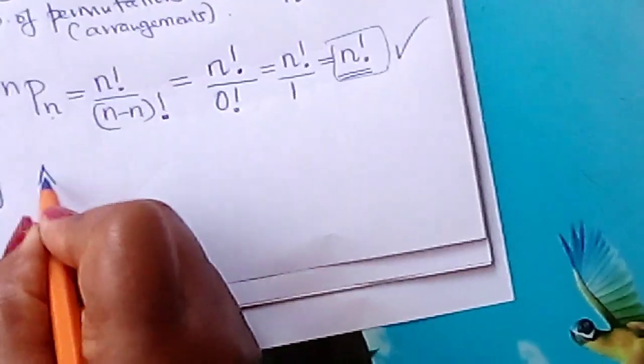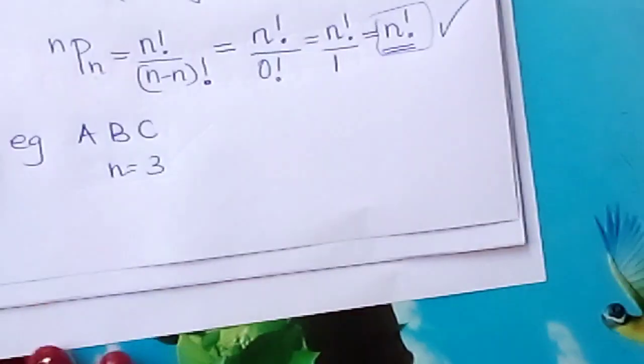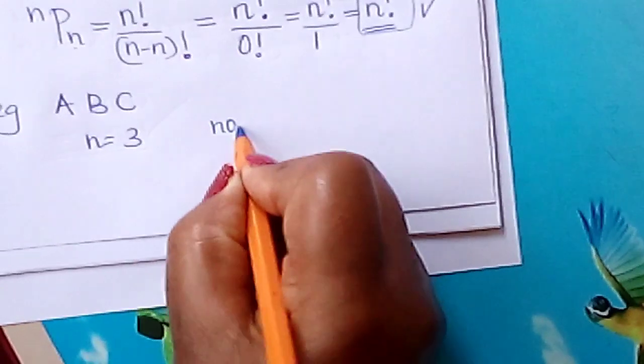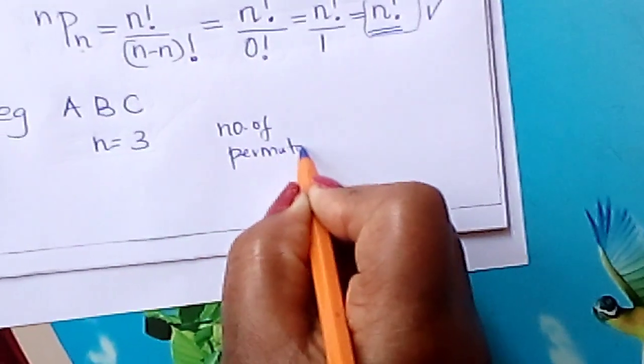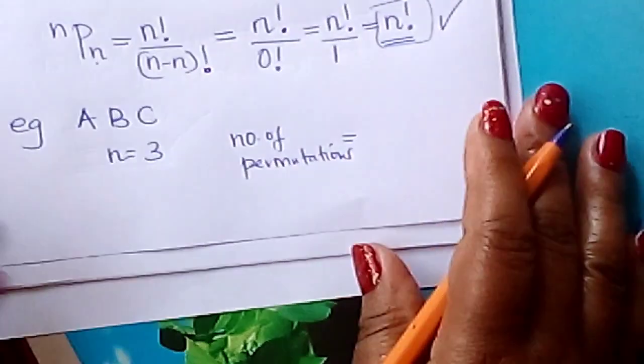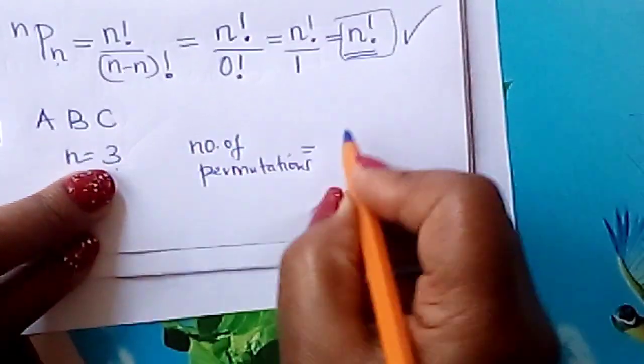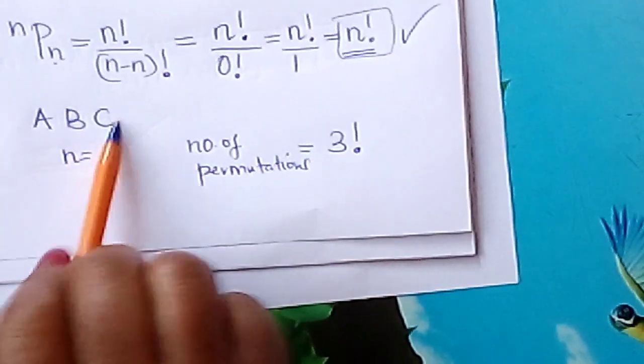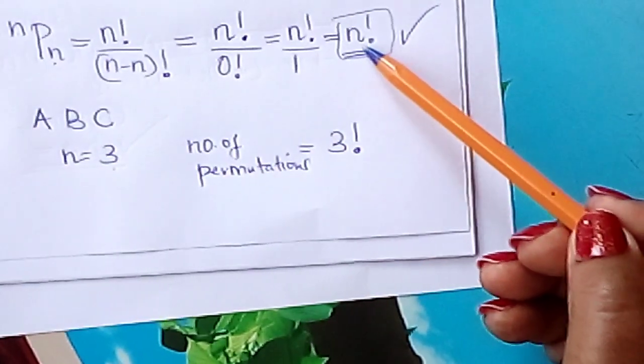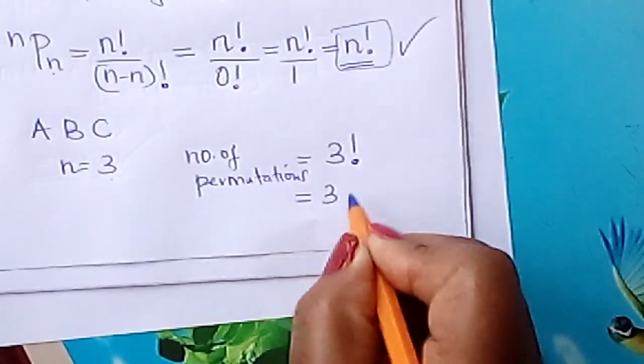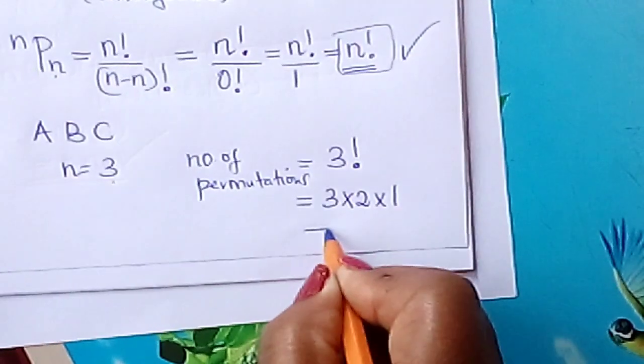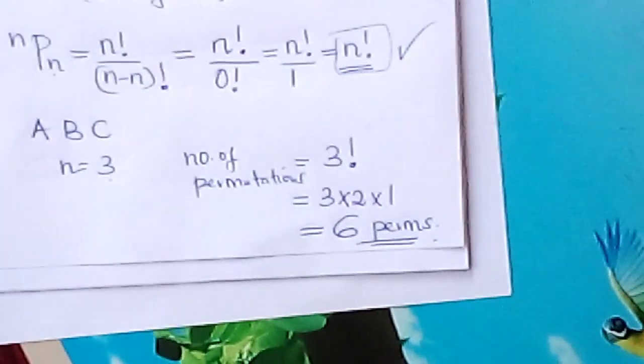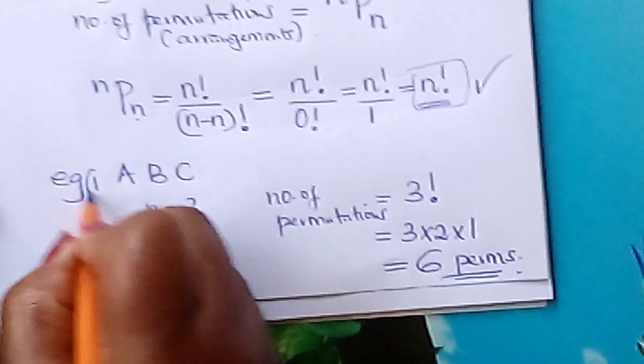In our case here, A, B, C, our n is 3. 1, 2, 3, three different letters. Therefore, the number of permutations would simply be 3 factorial. Because all the letters are different, you just talk of 3 factorial, just like we talked of n factorial. 3 factorial is 3 times 2 times 1, which gives you 6 arrangements or 6 permutations. Let us call that example number 1.